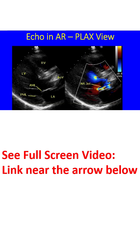This is a parasternal long axis view from another case. The aortic valve is seen as grossly thickened and calcified. The right panel shows the multicolored jet of aortic regurgitation along the ventricular surface of the anterior mitral leaflet. This is quite an eccentric AR jet, and hence assessment of severity will be difficult.